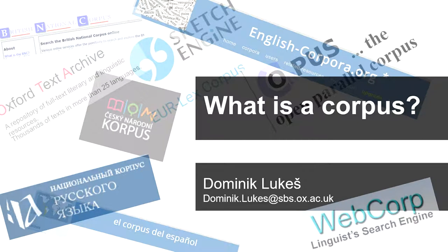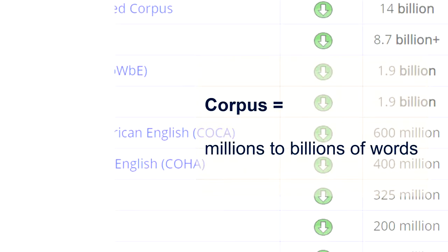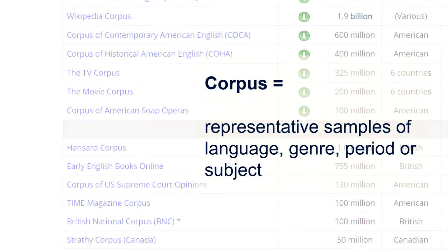Welcome to this brief introduction to what is a corpus. A corpus is a collection of texts, and it is quite large — it is millions, or very often these days, billions of words. But it is not just a random collection of words. It is a representative collection of samples of a whole language, of a genre, or a period, or a subject in a language.